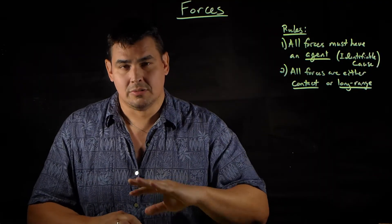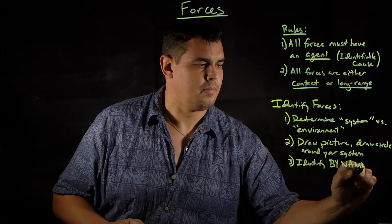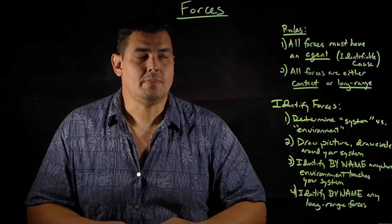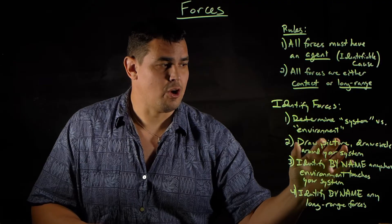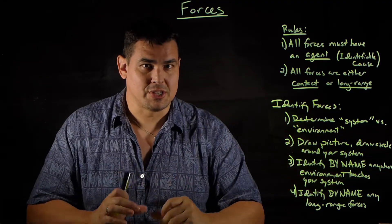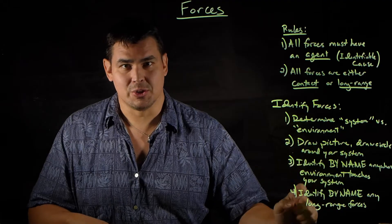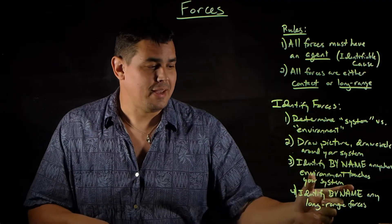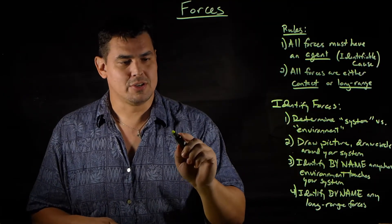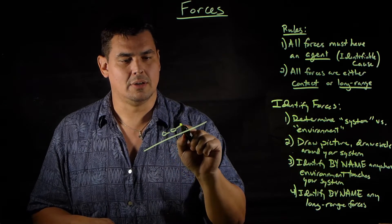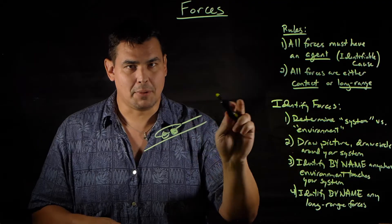There are four basic steps to identify forces. The first step is to determine what's in the system versus what's in the environment. The second step is to draw a picture and draw a circle around what is your system — the object you're looking at. The third step is to identify by name anywhere the environment touches your system — those are your contact forces. The fourth step is to identify by name any long-range forces. Let's look at an example: a car being towed up a hill, with a rope and something pulling the car up.